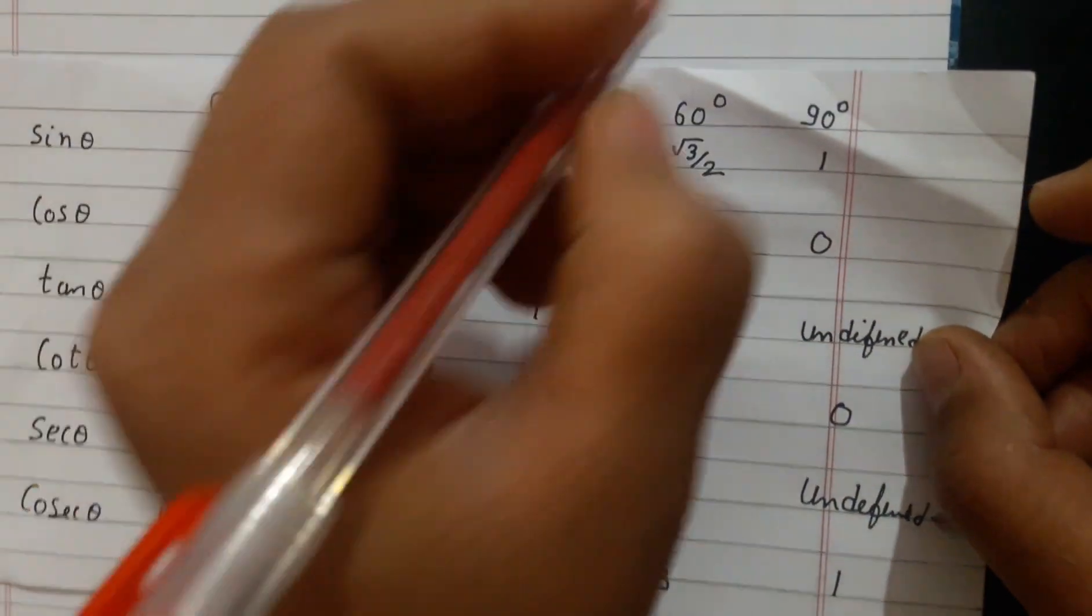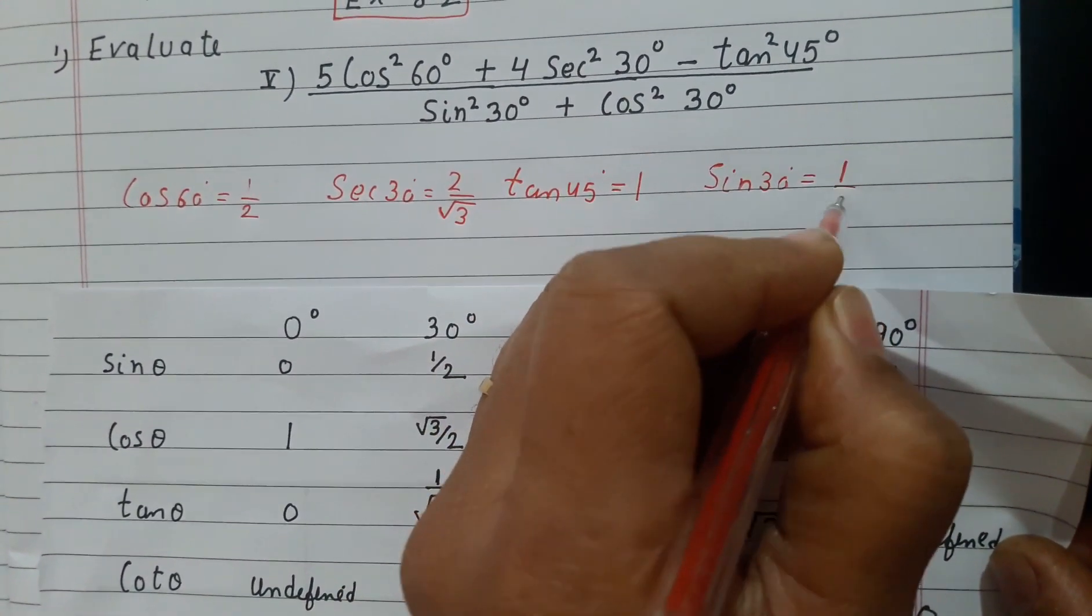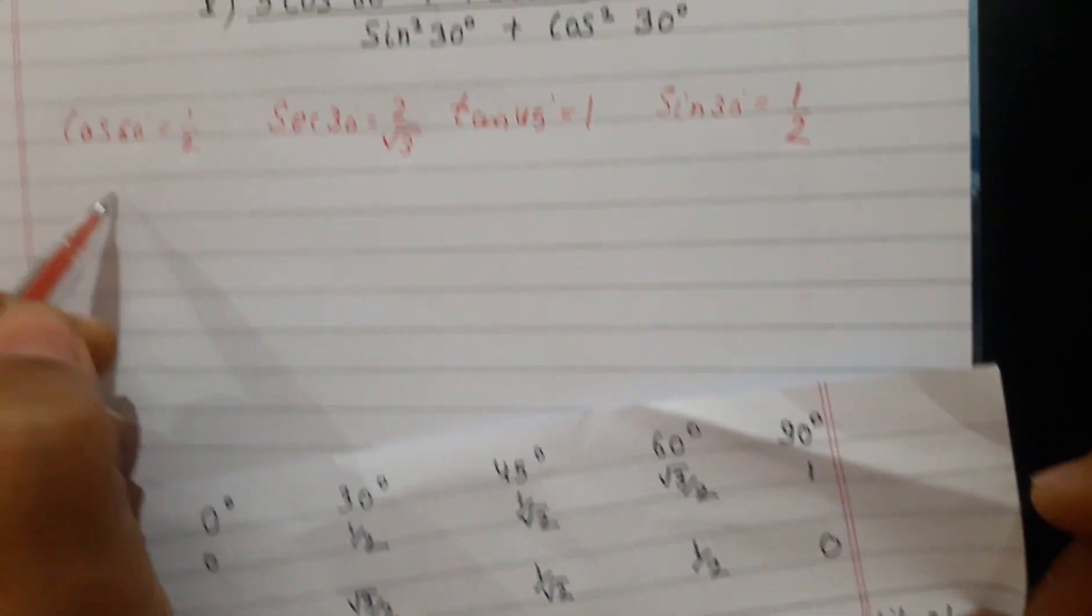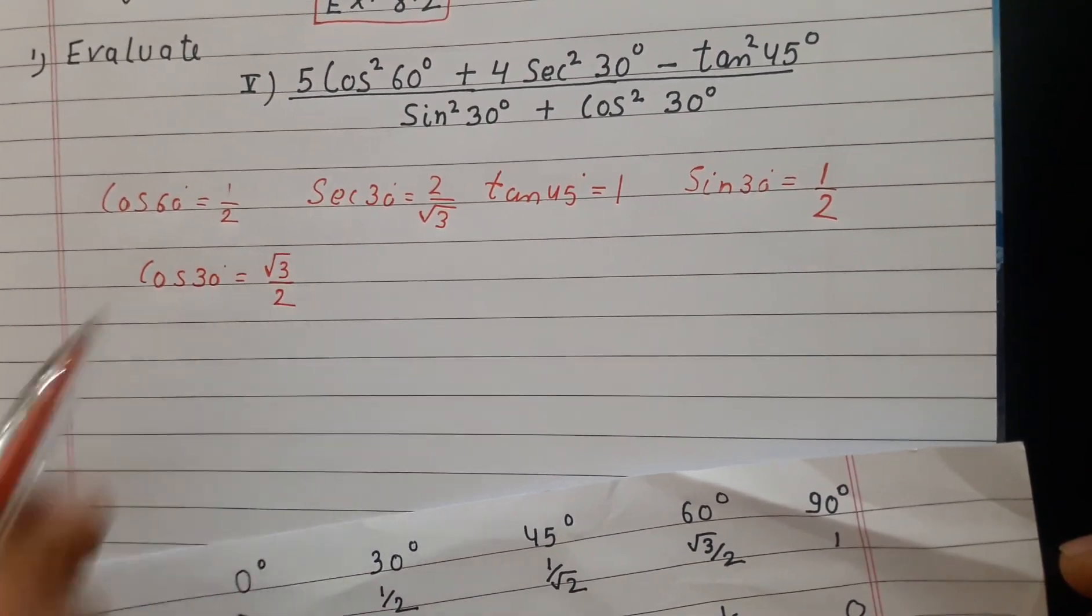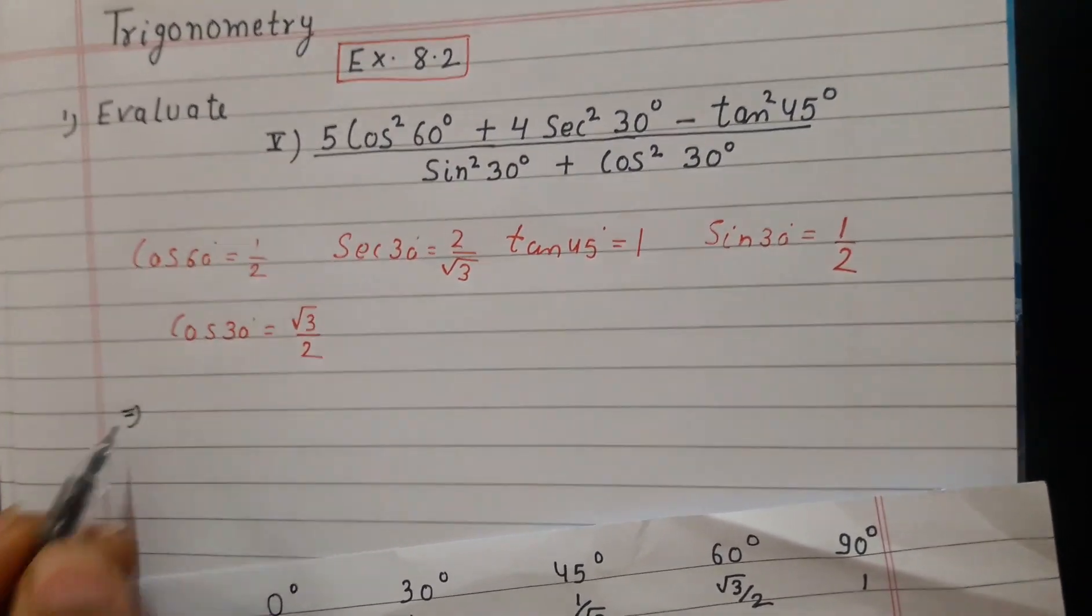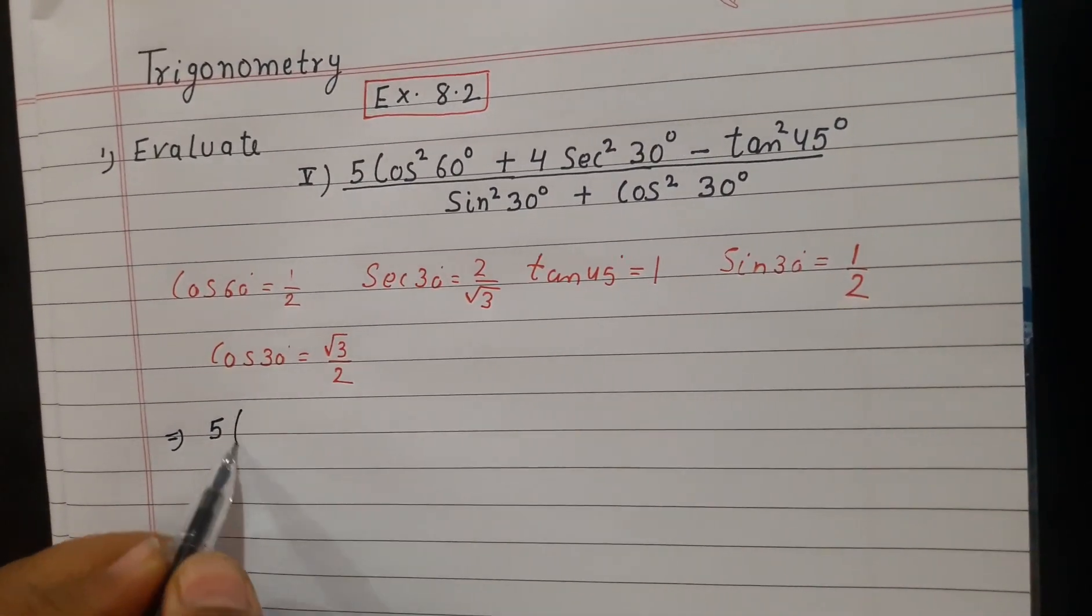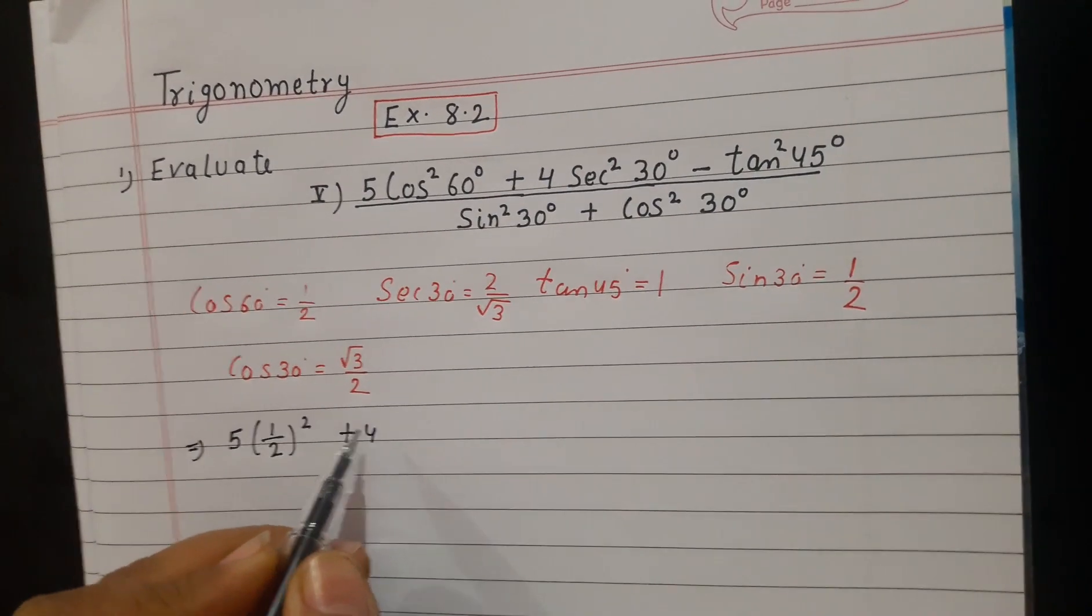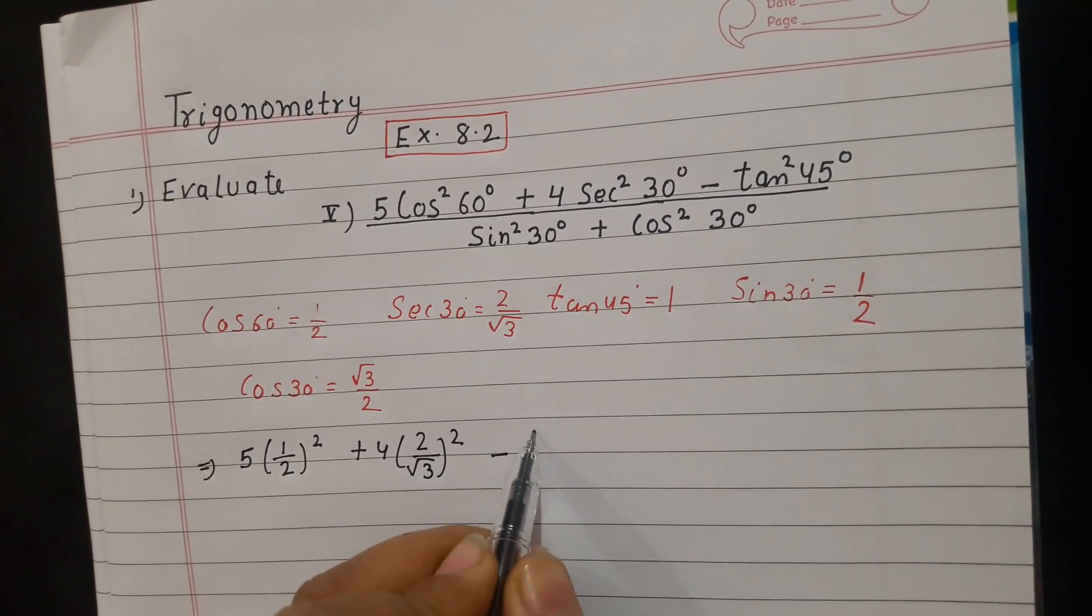Next, sin 30° is 1 by 2. Last, cos 30° is root 3 by 2.